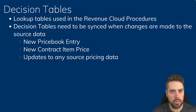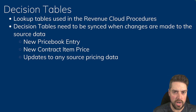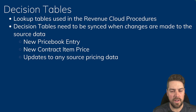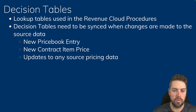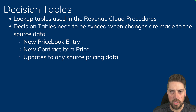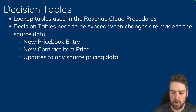If you create a new contract with a new contract item price, the decision table for contract item price needs to be refreshed for that pricing to be in effect in your pricing procedure. Similarly, if you have pricing tiers or volume tiers for specific products, every time you make changes to those entries your decision tables need to be refreshed for those changes to take effect on your pricing procedure.